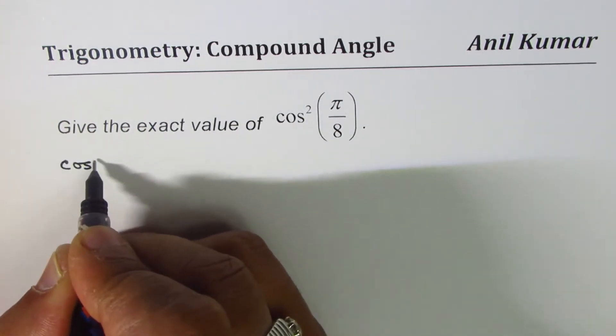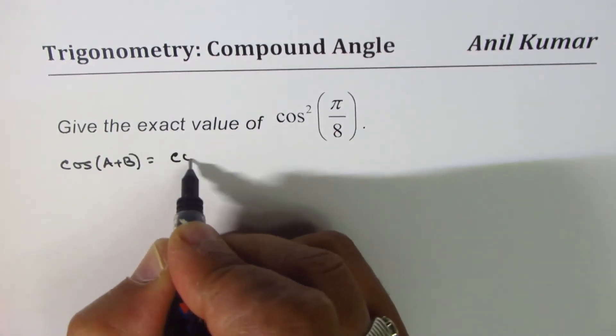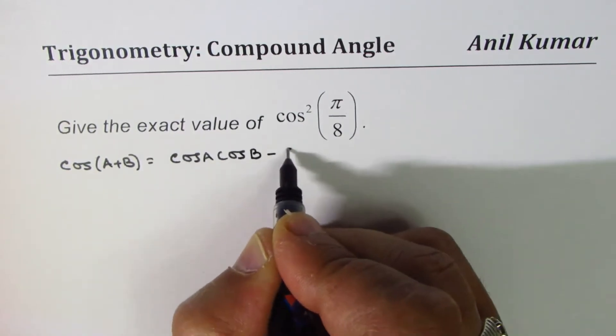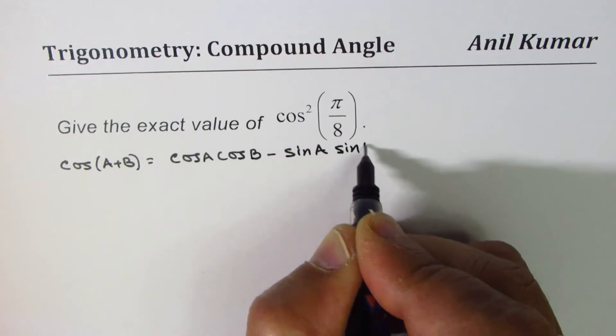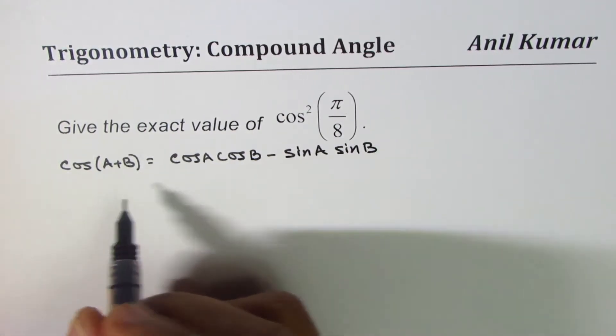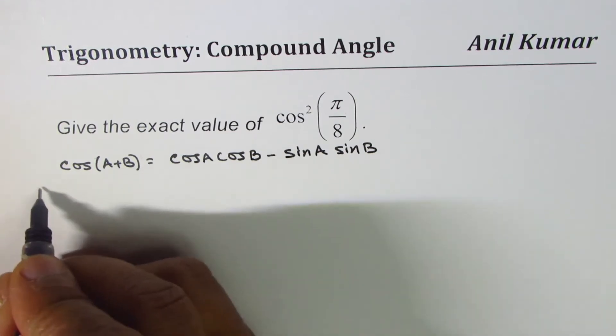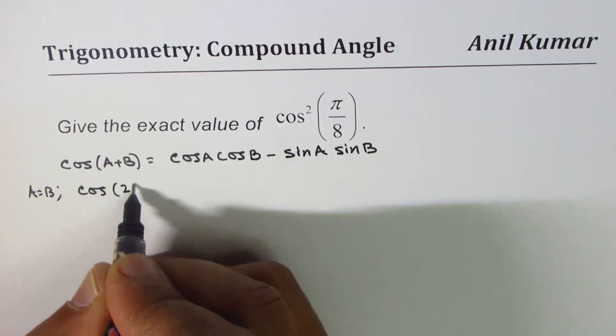Now we'll use compound angle formulas to solve this question. To give you a background, let's say we have cos(A+B), right? So cos(A+B) is cos A cos B minus sin A sin B. Now because some of you may not remember the formula, if A equals B...